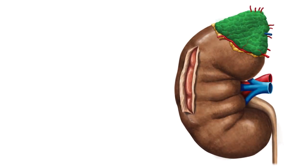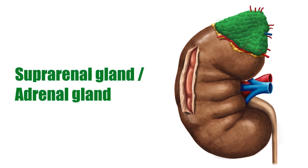This asymmetrical organ seen highlighted in green and sitting above the kidney is known as the adrenal gland or suprarenal gland. You have one on top of each kidney. They are located in the retroperitoneal space and are responsible for secreting stress hormones that stimulate the physiological adaptations necessary to mitigate changes in the external environment.